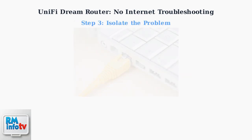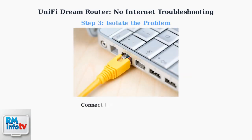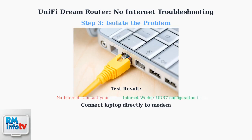Step three helps isolate whether the problem is with your internet service provider or the UDR7 itself. Connect a laptop directly to your modem using the same ethernet cable. If you still have no internet, the issue is with your ISP and you should contact them. If the internet works directly through the modem, then the problem is with the UDR7 configuration.